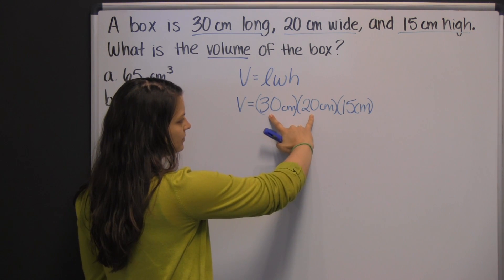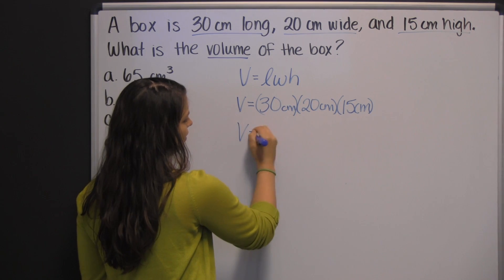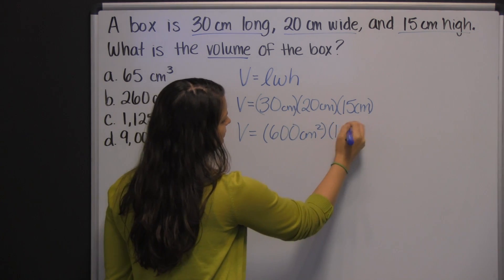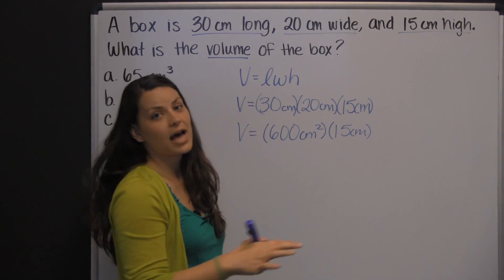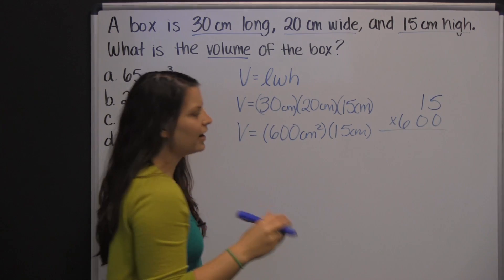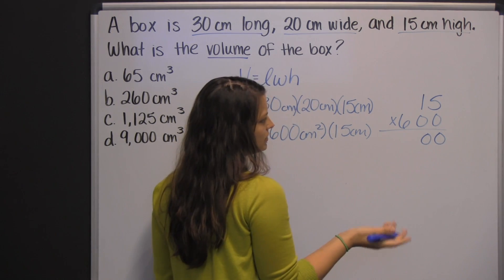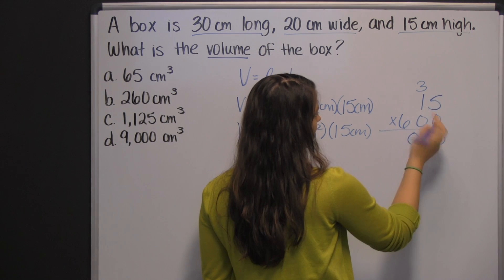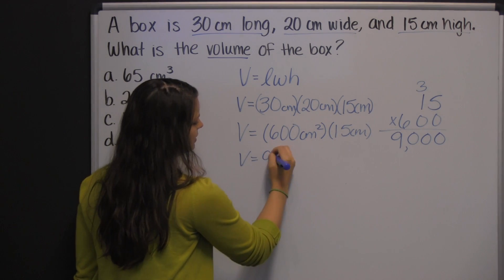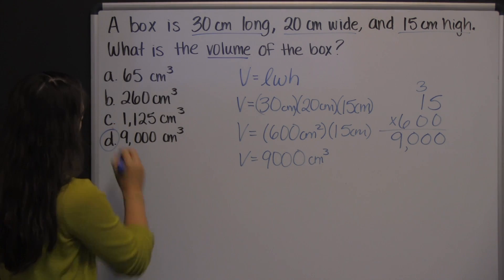I would start with multiplying thirty times twenty. You can do that in your head — three times two is six, and then you have the two zeros, so that's six hundred times fifteen. Six hundred centimeters times centimeters is centimeters squared, times fifteen centimeters. I would put the fifteen on top — six times five is thirty, carry your three; six times one is six, plus three is nine. So the volume is nine thousand centimeters cubed.